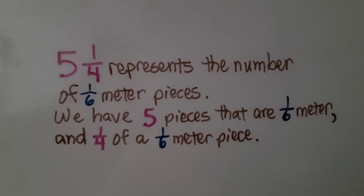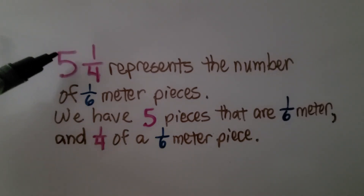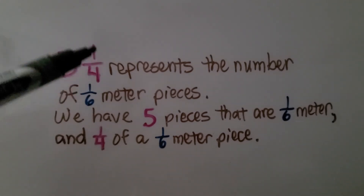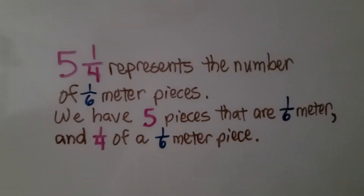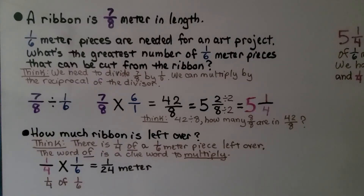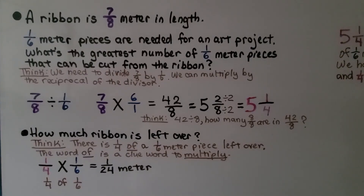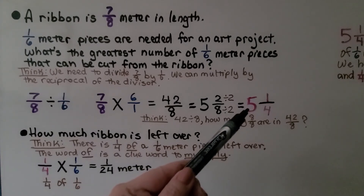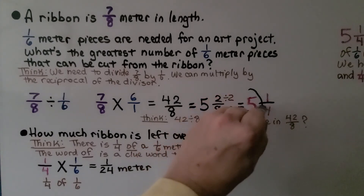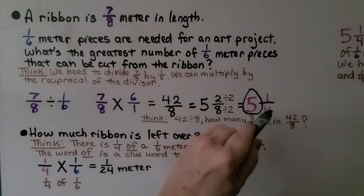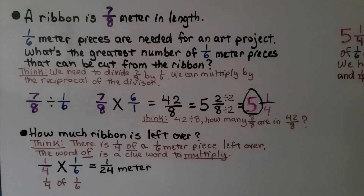Five and one-fourth represents the number of one-sixth meter pieces. So we have five whole pieces that are one-sixth meter in length, and one-fourth of a one-sixth meter piece. The greatest number of one-sixth meter pieces that can be cut from the ribbon is five, because that remaining one-fourth of a one-sixth piece is not enough for a full piece. We get five full one-sixth meter pieces. So how much ribbon is left over?